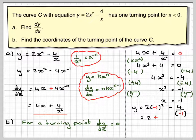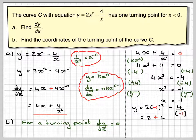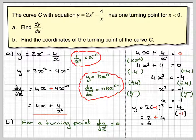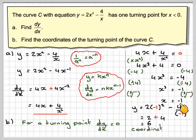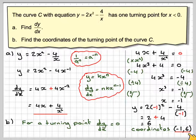1 times 2 is 2, and this is going to give minus minus 4, which gives plus 4, which equals 6. So the coordinates are minus 1, 6. The turning point is at minus 1, 6.